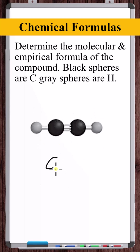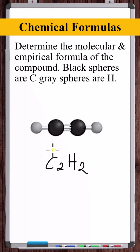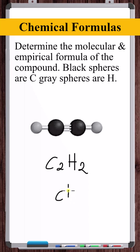Here we've got two carbons and two hydrogens, giving a molecular formula of C2H2. Now what's the empirical formula? This is just one part carbon to one part hydrogen, so the empirical formula is CH.